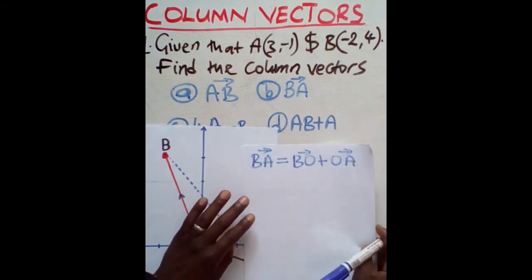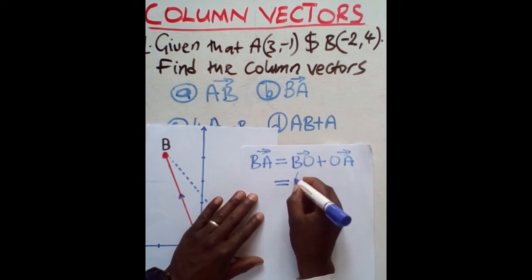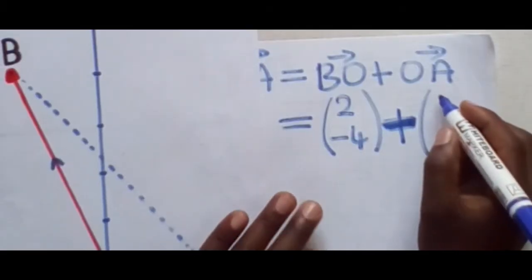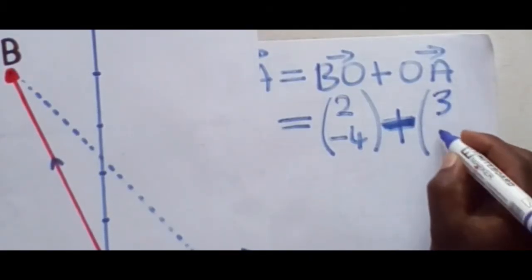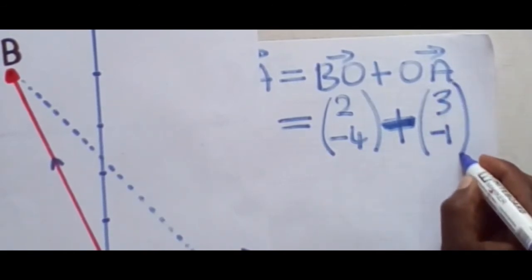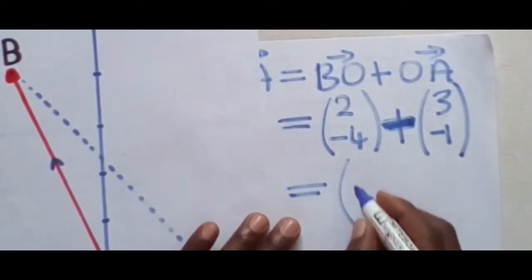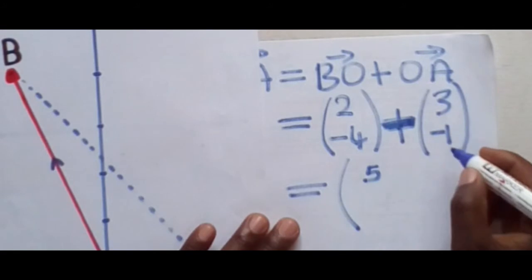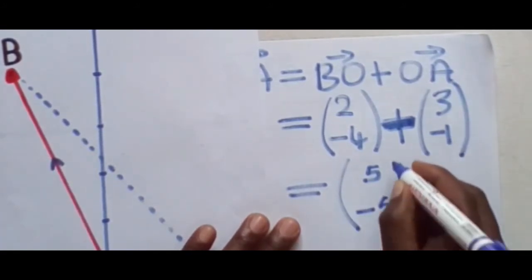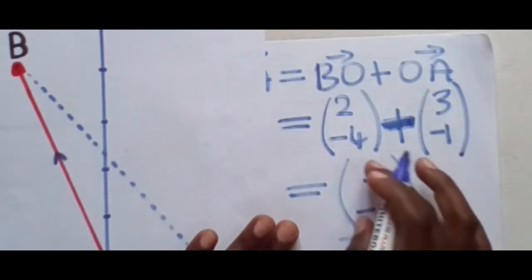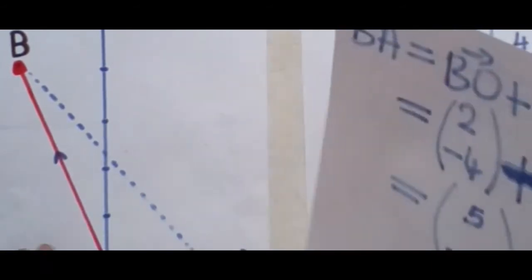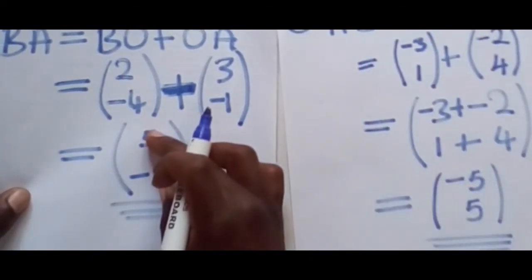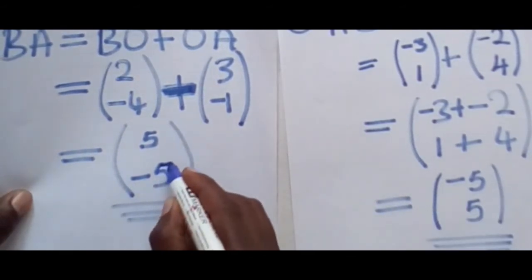Substituting: BO = (2, -4) plus OA = (3, -1). So 2 + 3 = 5 and -4 + (-1) = -5. Therefore BA = (5, -5). Just as stated, AB and BA are opposites: AB is (-5, 5) and BA is (5, -5).